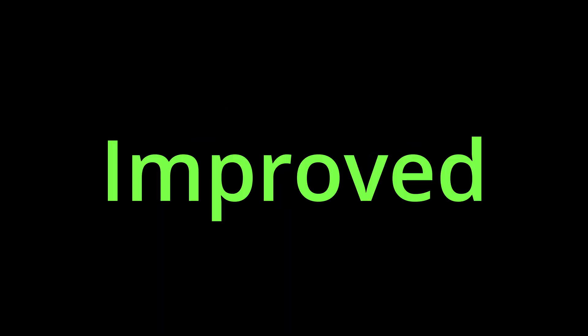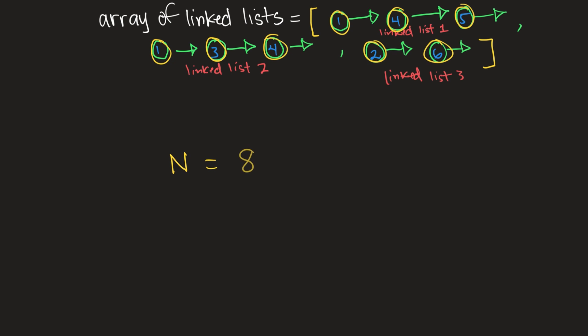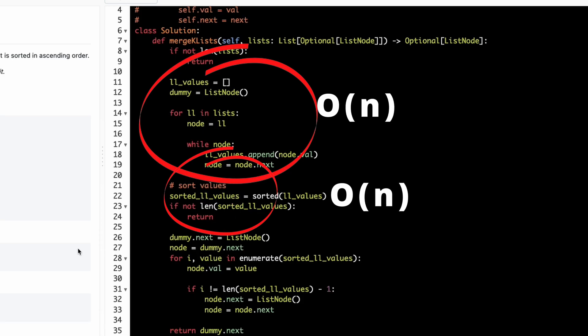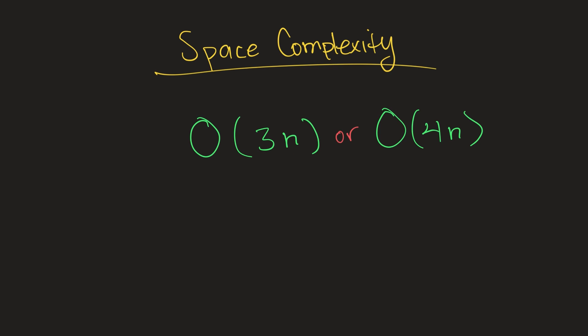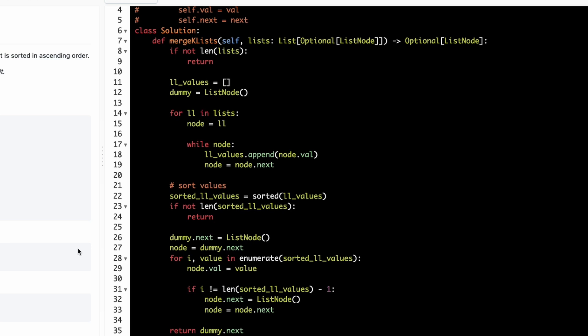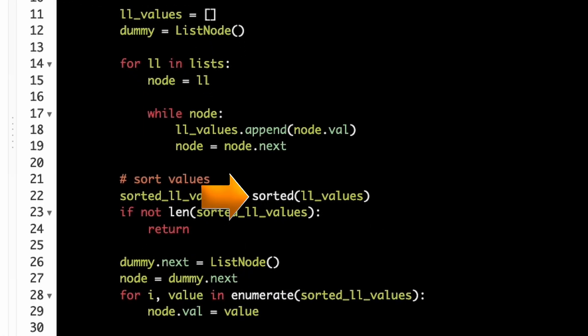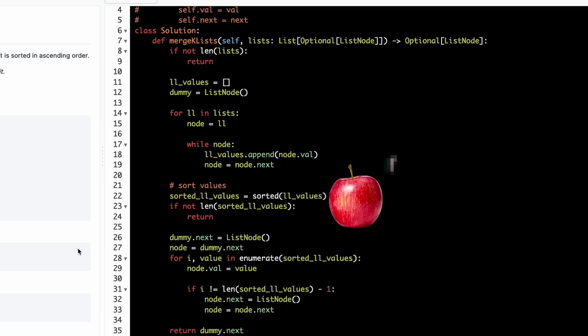Step three: figure out what can be improved. To understand what can be improved, we need to figure out the time and space complexity of our current solution. We're creating an array that contains N values, where N is the number of nodes in all linked lists. We're also creating a sorted version of that array, and there's a chance the sort function uses O(N) space. Finally, we create a new linked list containing all these values. That means our space complexity is O(3N) or possibly O(4N), but since it's constant, it simplifies to O(N). For time complexity, it's O(N log N), because the sort function is using something similar to merge sort on N items — making it the highest order term.